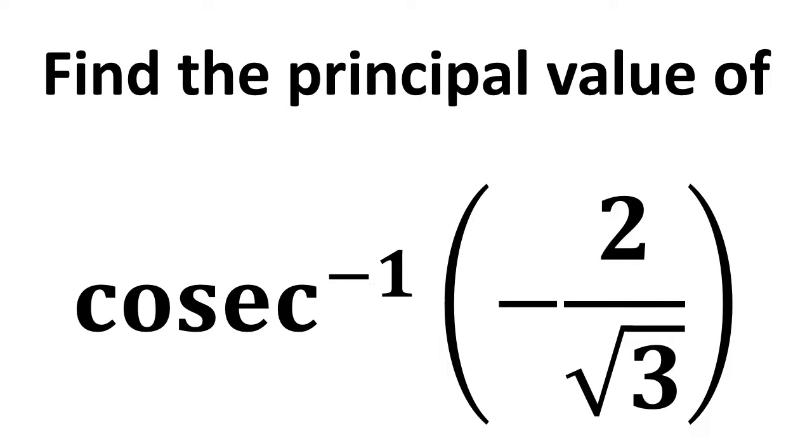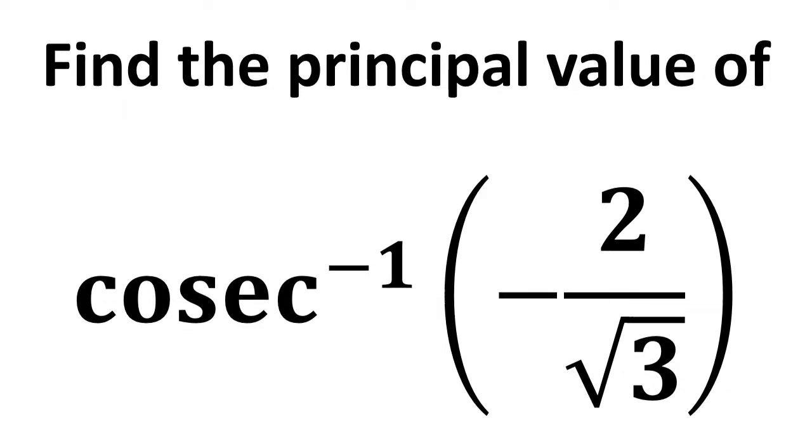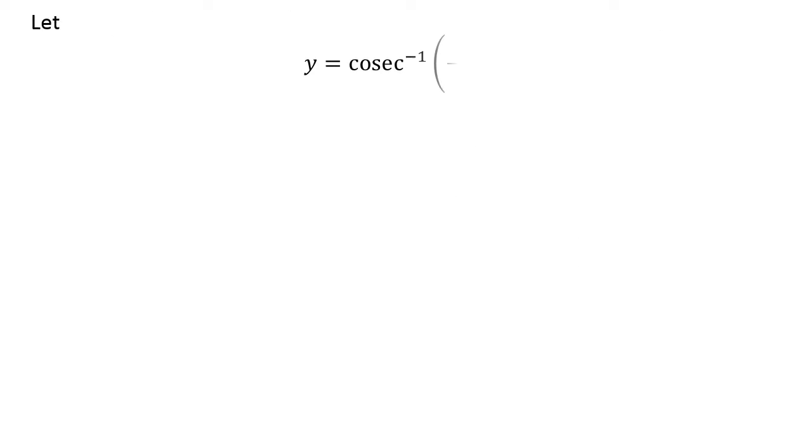In this video, we learn to find the principal value of inverse cosecant of minus 2 upon square root of 3. Let us assume y equals inverse cosecant of minus 2 upon square root of 3.